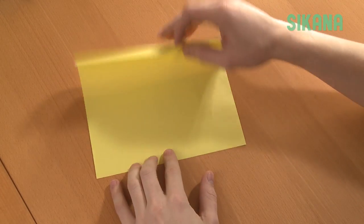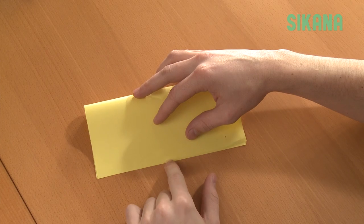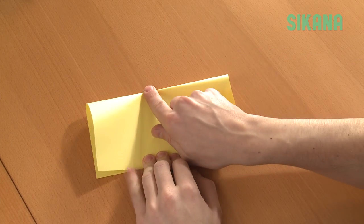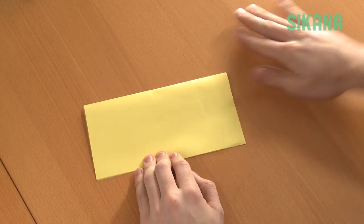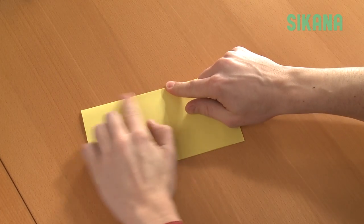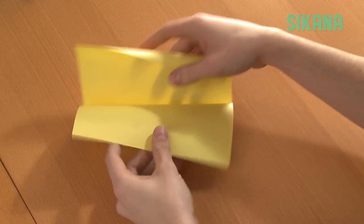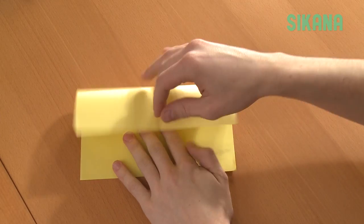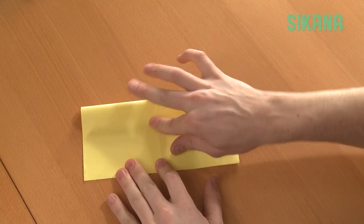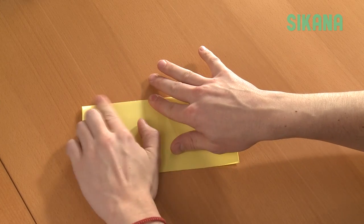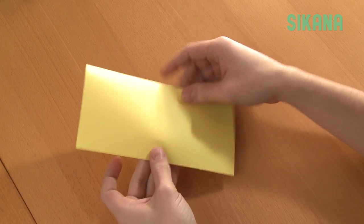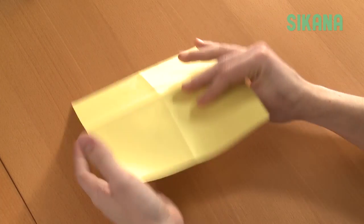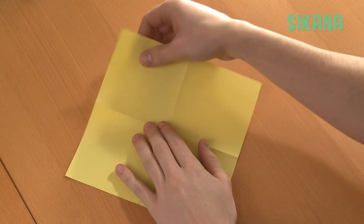Take a square sheet of paper and fold it in half. Then open and fold the other half like this. Open again, turn and fold diagonally.